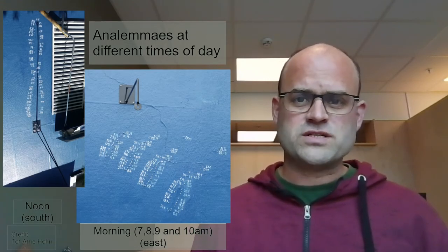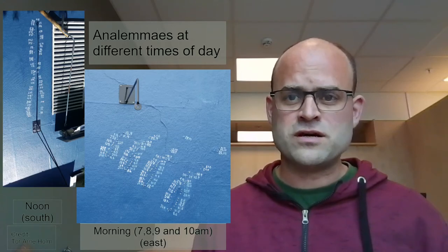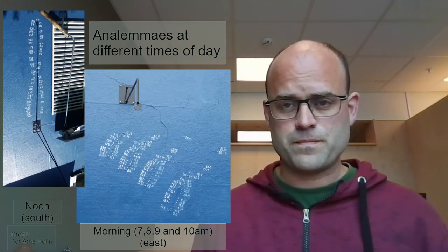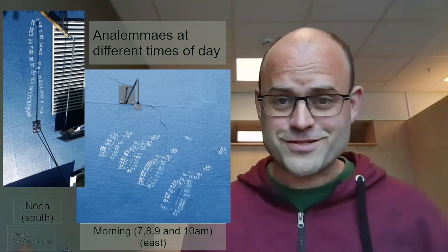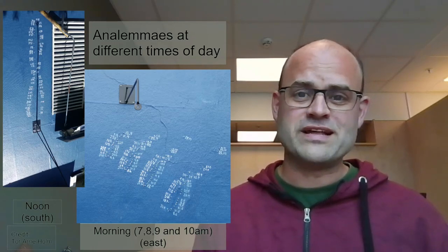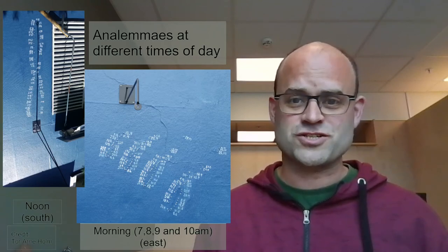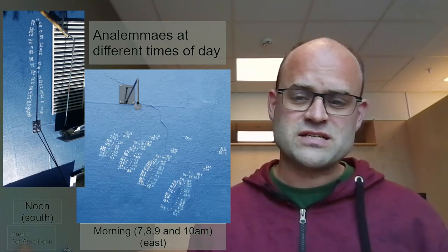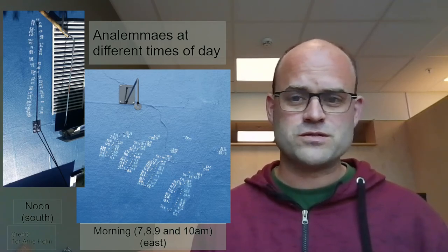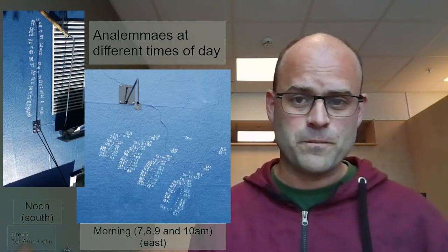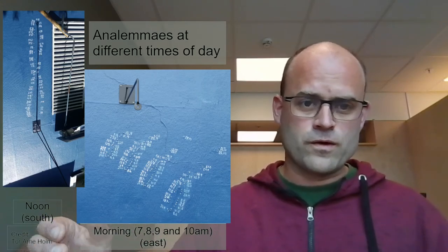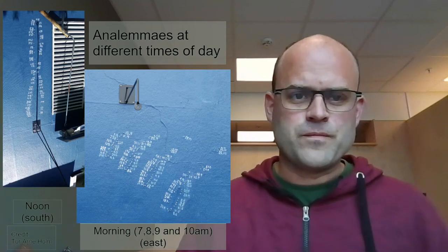Let me show you some other products of this. These are analemmas made at different times. The left image is an analemma which is made at 12 o'clock. The right and the biggest image is on the wall facing east, and the person who's made them has made analemmas for four different clocks: 7, 8, 9, and 10 in the morning. And they get slightly different shapes, and of course the one at the latest time will get longer and longer as the projection gets more in other directions.